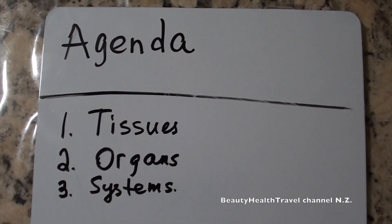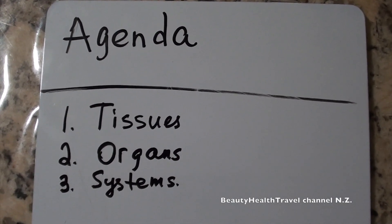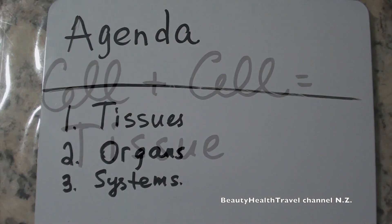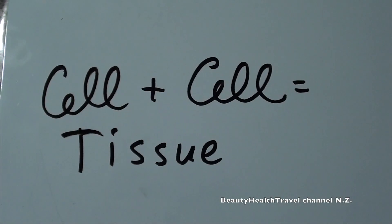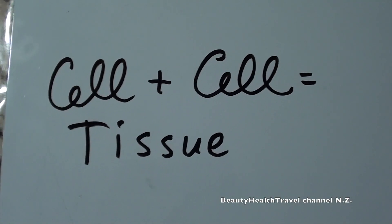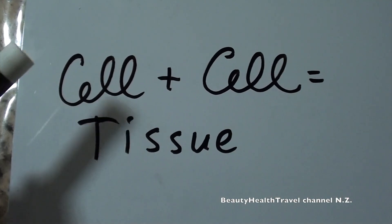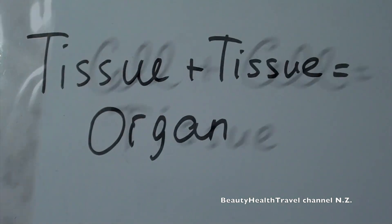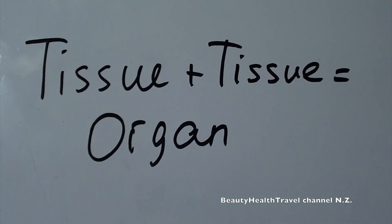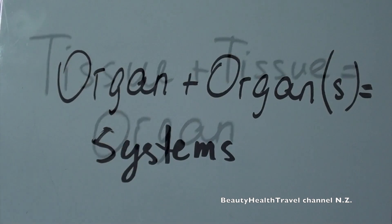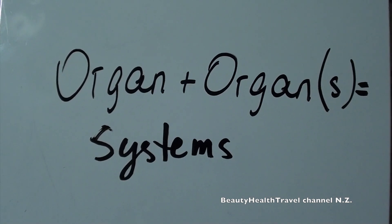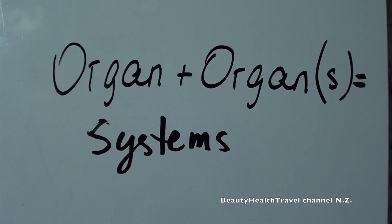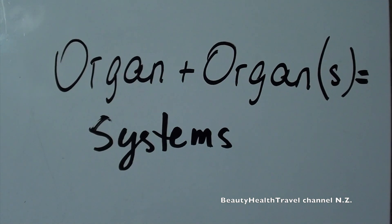Good morning students. Today's agenda is tissues, organs, and systems. Last time we talked about cells. Cell plus cell equals a tissue. Similar tissues can make an organ. And organs together that perform the same function could make a system or systems.